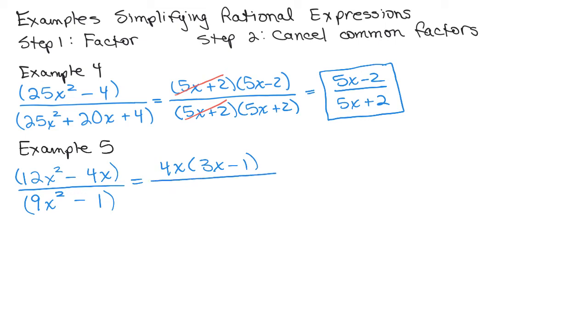Now the denominator, there's no common factor, but here we have a difference of two squares again. So it's 3X plus 1 times 3X minus 1. And now we can cancel our common factor, which is 3X minus 1, to get 4X over 3X plus 1.